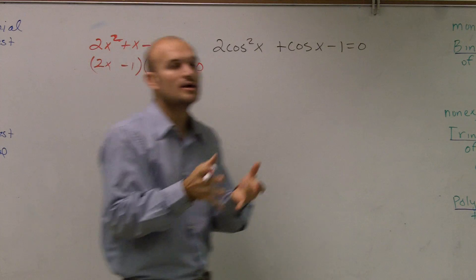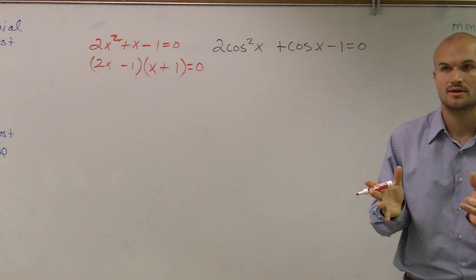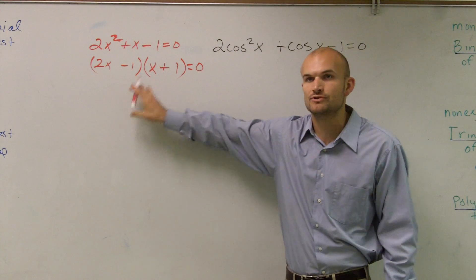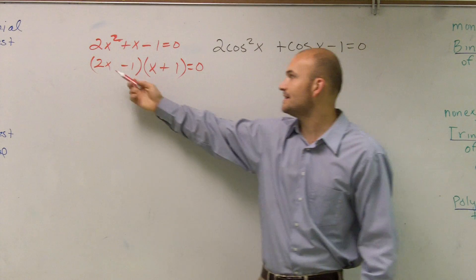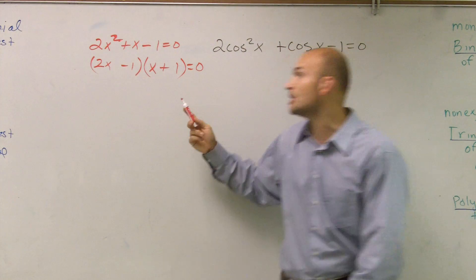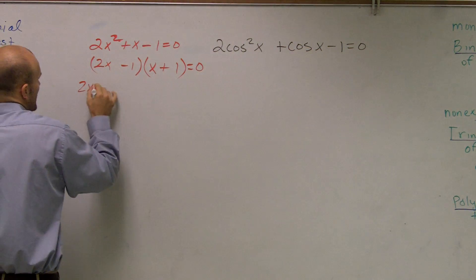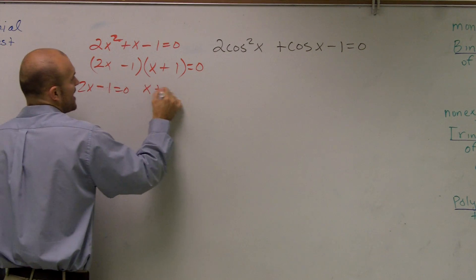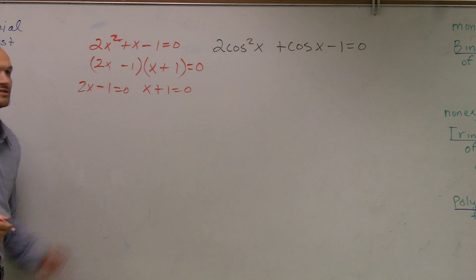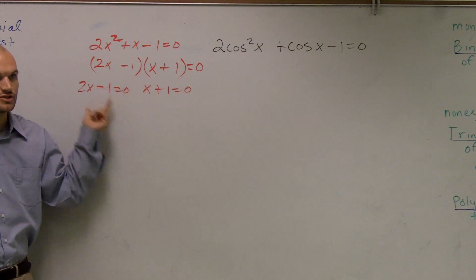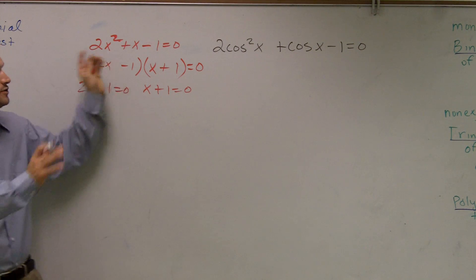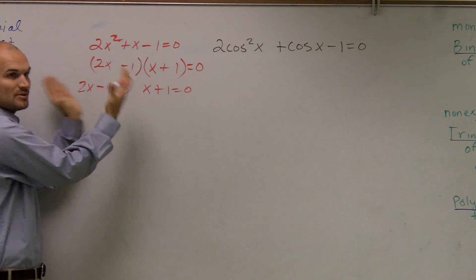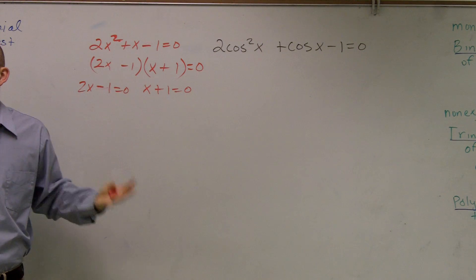because when you have two terms and you're factoring, what you can now do is use the zero product property, saying that if this times this equals zero, I can now set both of them equal to zero. And that's why factoring is so important, because now you have one variable in your equation that you can solve for. Does that make sense? So if you have two of your variables that you're trying to solve for, look for a factoring term.